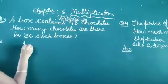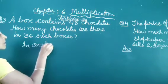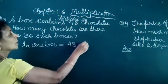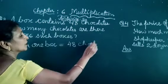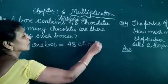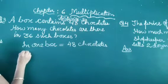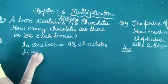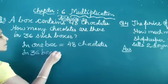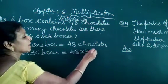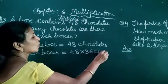In one box equals 48 chocolates. In 36 boxes equals 48 multiplied by 36 chocolates.